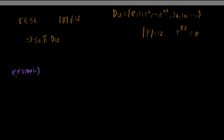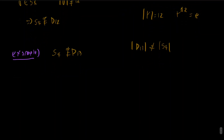Let's give yet another example, as a demonstration of another way to prove two groups are not isomorphic. Take S4 and D13. This is very trivial — the reason these two groups are not isomorphic is because their orders are different, so we cannot even construct a bijection from one to the other.